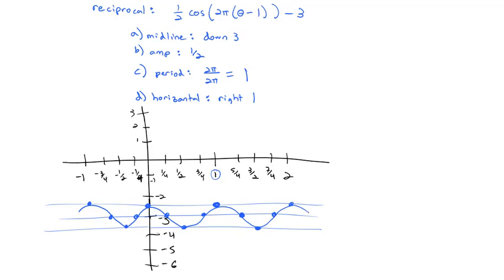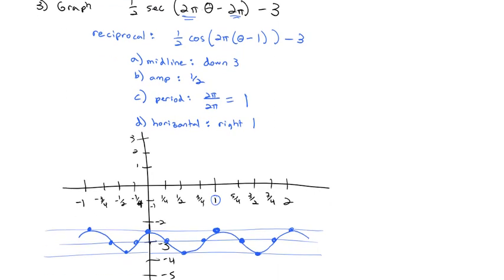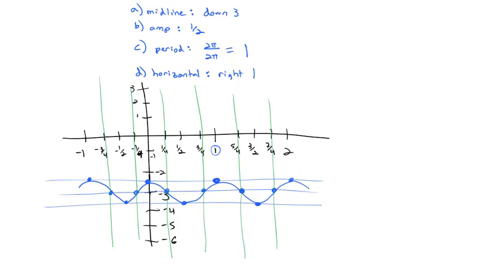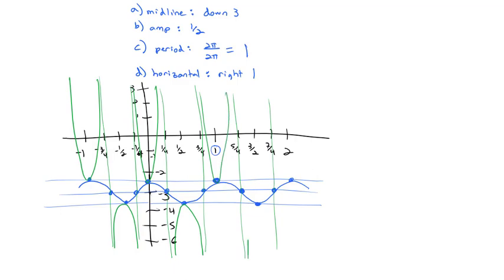Since we wanted to draw secant, not cosine, everywhere the cosine hits the midline we add a vertical asymptote. The graph curves up from the asymptote to hit each peak, then down and up between asymptotes. Erasing the blue cosine graph, what remains in green is the secant graph of ½ sec(2πθ − 2π) − 3.